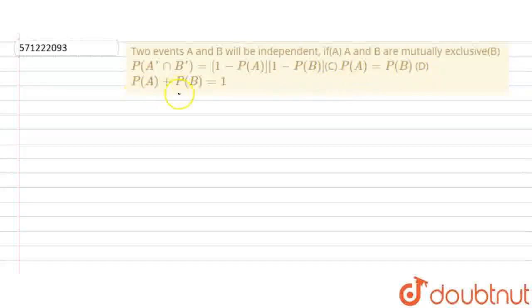Option D is probability of A plus probability of B equals 1. Now, we know if two events are independent, then probability of A intersection B equals probability of A into probability of B.